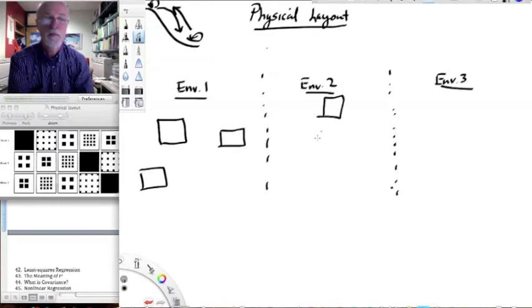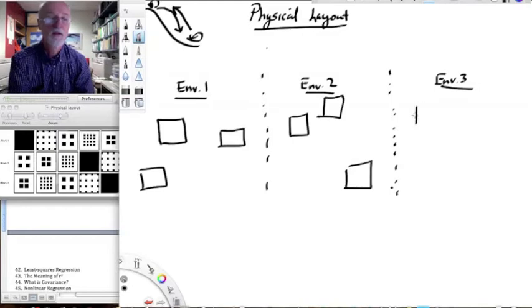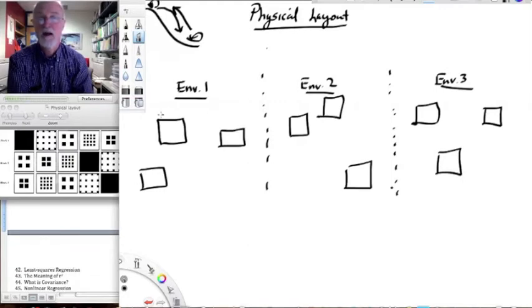And I'm, again, just showing randomly located blocks. So obviously block is going to be a random factor. So I have block one, two, three, four, five, six, seven, eight, nine. That clearly shows I have nine different blocks in three different environments.